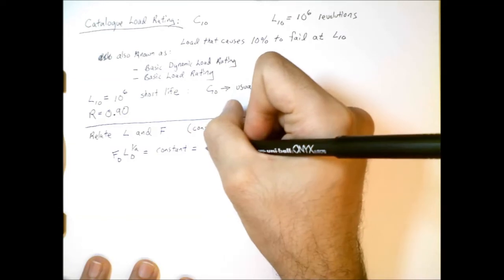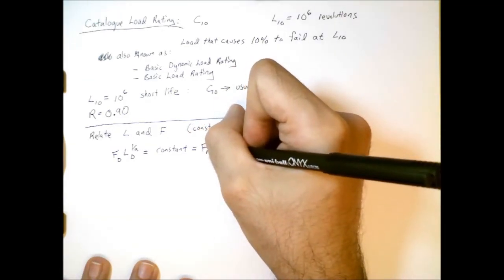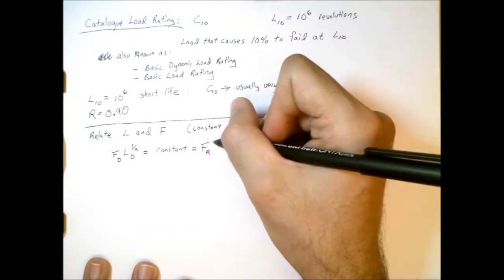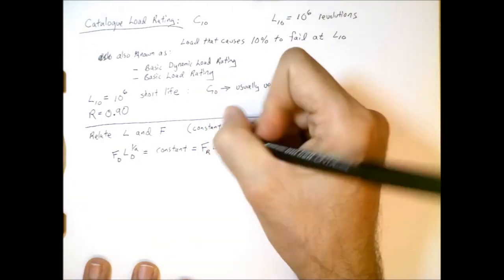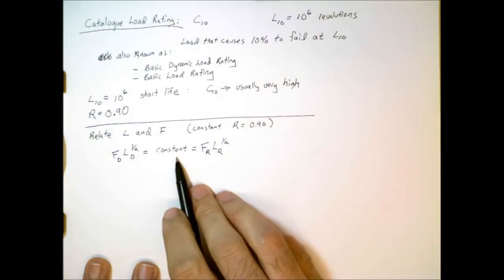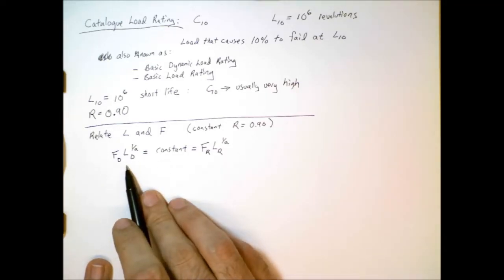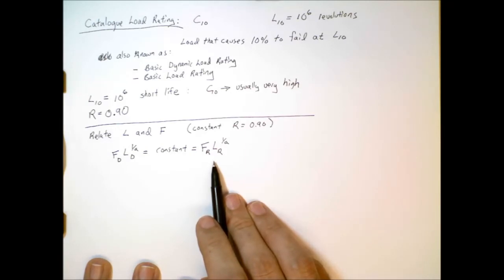So, that means if we have some design or desired force that our bearing needs to support and then some desired life, then that's equal to a constant. And for the same bearing, the catalog force, catalog load rating, times the catalog life to the power of 1 over A is equal to the same constant, if we're talking about the exact same bearing. So, this formula gives us a way of relating our design requirements to the available data in the catalog.